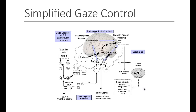My objectives today are to focus on a small area of gaze control. As you can see, this is a very complicated system that involves the brain, the cerebellum, the brainstem structures of nuclei and nerves, but what I'm going to focus on today in particular are the extraocular muscles and the nerves.